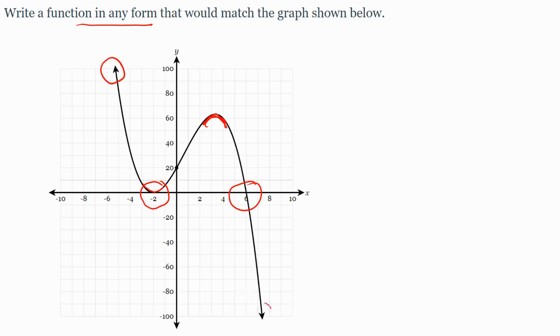We also see that the end behavior is going down from left to right. If I connect those arrows, I see it looks like a negative slope line. Negative slope means that I have a negative a value, negative leading coefficient, and we decide that it's an odd degree polynomial.